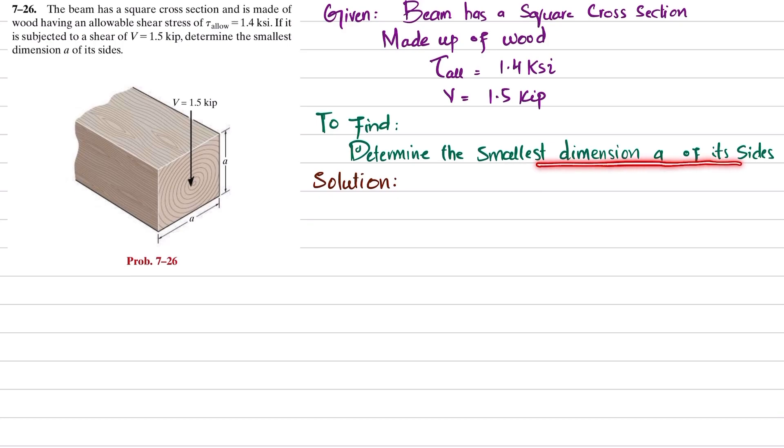So let's start with the solution. As we know, the maximum shear stress, which is also equal to allowable shear stress, is equal to V·Q divided by I·t. So we will find—we have V, we do not have Q, we do not have I, we have t as well.